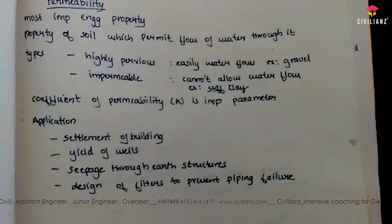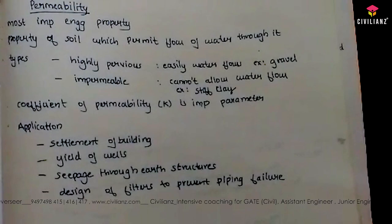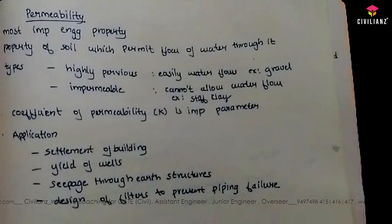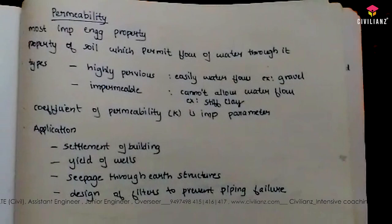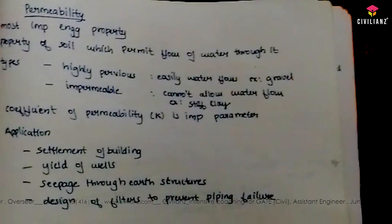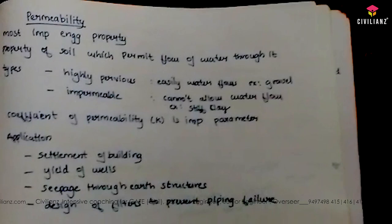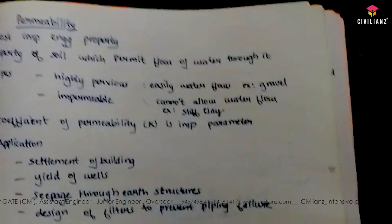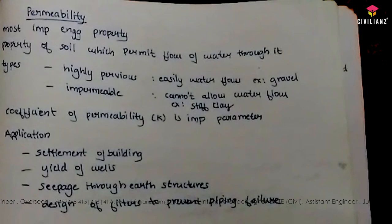There are two types of soils: highly pervious and impermeable. In the case of highly pervious soil, water can easily flow through it — for example, gravel. In the case of impermeable soil, water cannot flow through it easily — for example, stiff clay. Fully impermeable soil cannot actually exist in nature; it is a theoretical concept.